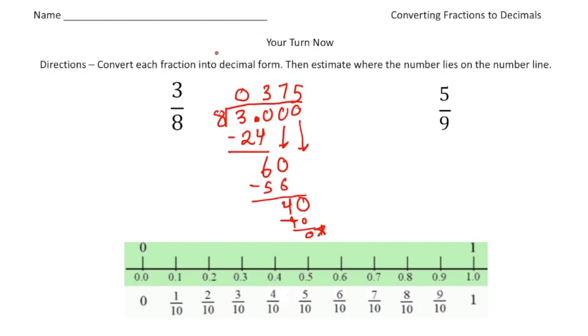So if I was going to put this on the number line, three eighths, I know it's gonna be between point three and point four. So it's gonna be a little bit closer to four tenths than three tenths. So I'm gonna assume it'd be right about there. So three eighths would be right about there.